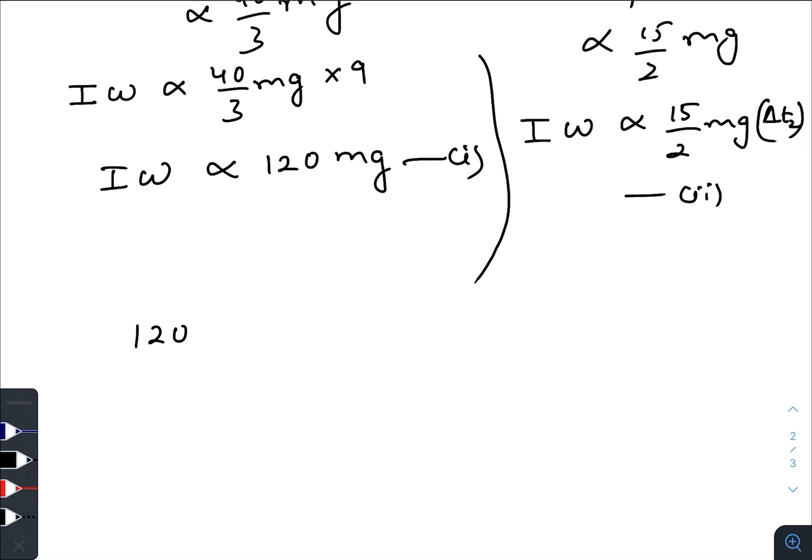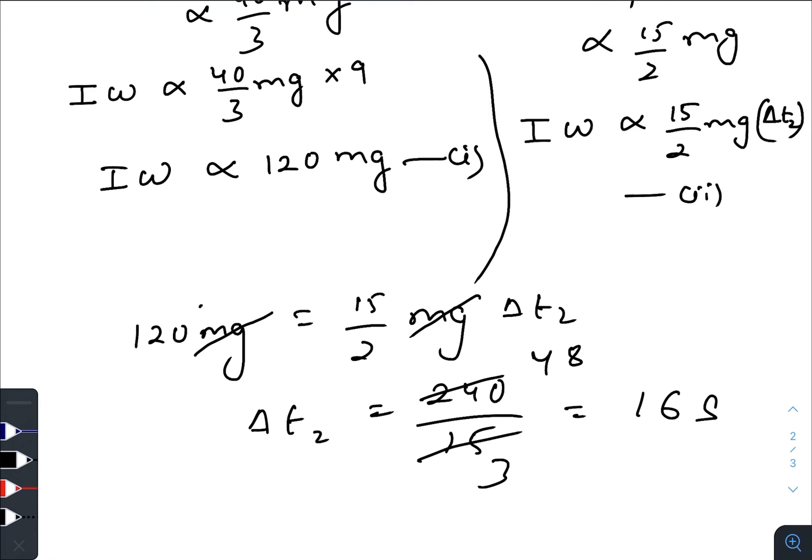We will just equate these two values. So 120 mg equals to 15/2 mg Δt2. mg gets cancelled out. Δt2 is equal to 240 divided by 15, so 16 seconds.